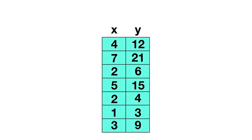Let's practice identifying these together. Here is a table of inputs and outputs, and we want to identify if it's a function. An easy place to start is to look for any inputs that appear more than once. We can see that the input of 2 is listed more than once. Sometimes this 2 gives us an output of 6, but other times this input of 2 gives us an output of 4. So one input — just the 2 — can give us many different outputs: either a 6 or a 4. Because this doesn't have only one output for each input, this is a relation.